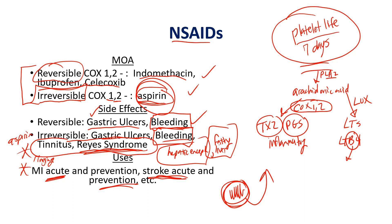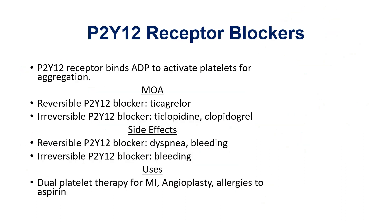High yield points: aspirin causes tinnitus as a side effect. It causes Reye syndrome, so never give it to kids. Platelet life is seven days — irreversible COX-1 and 2 inhibition with aspirin means a patient must not have been taking aspirin for seven days prior to surgery. That's really high yield. And just know the high-yield NSAID names.